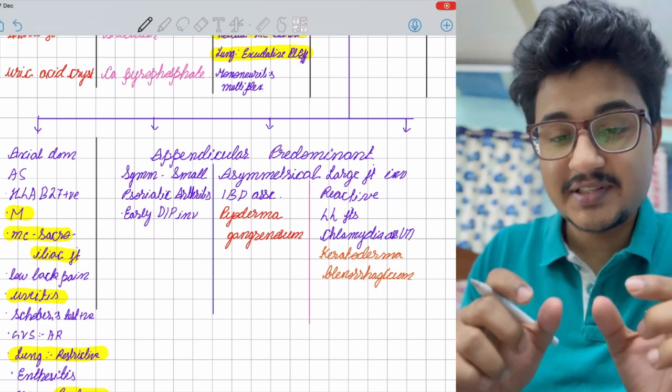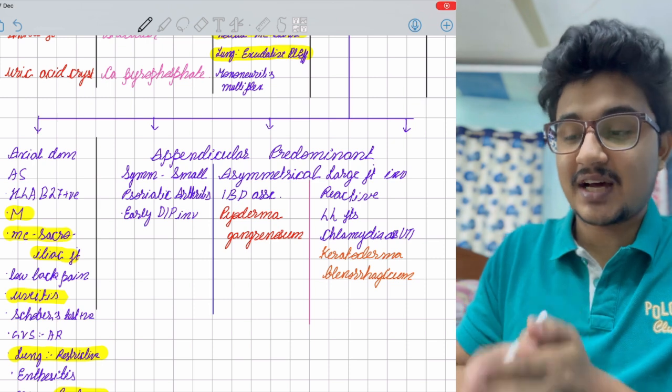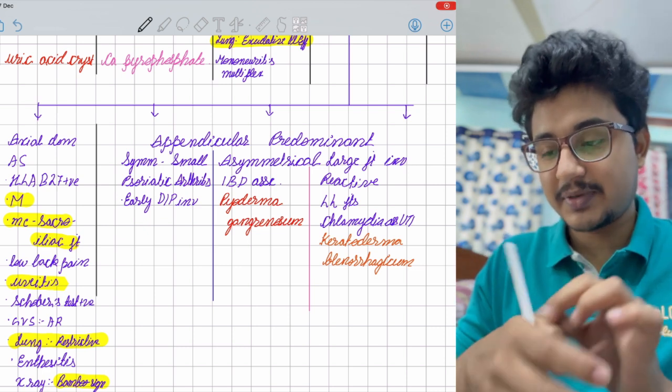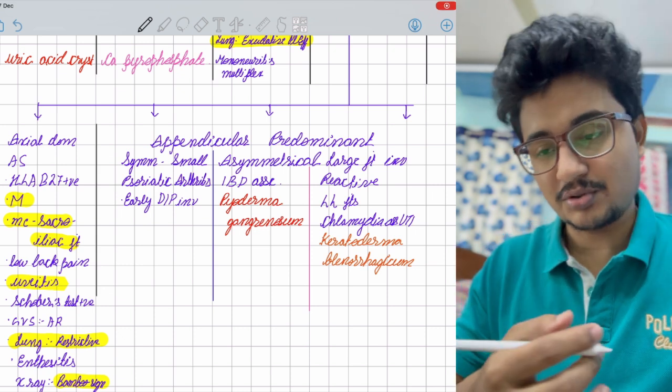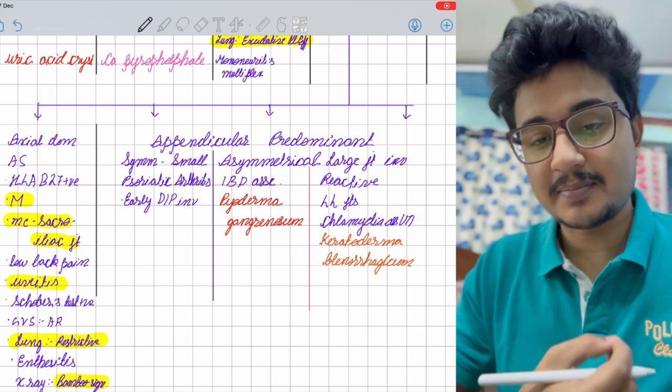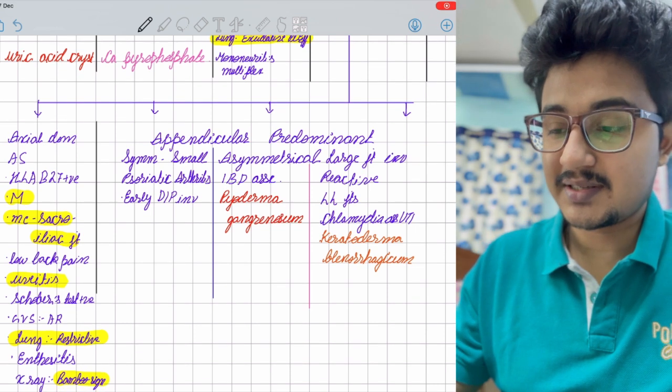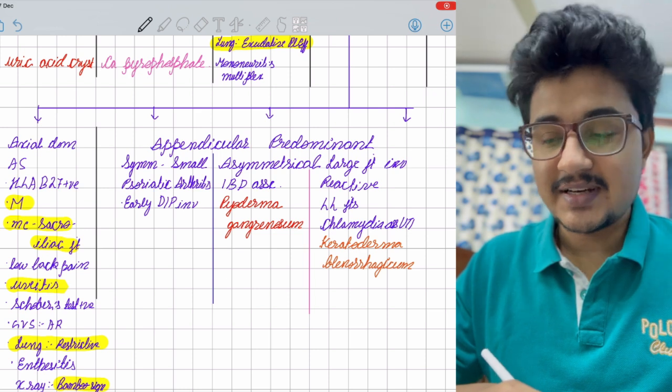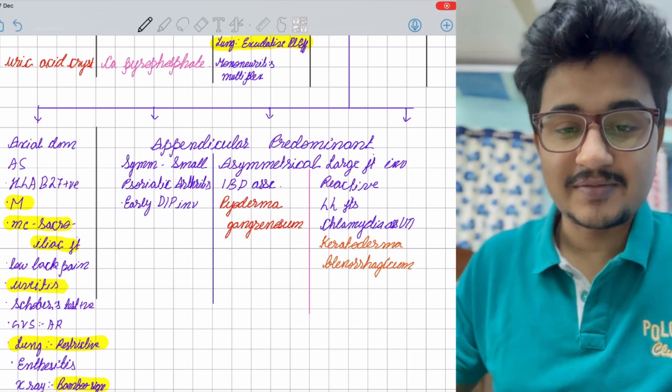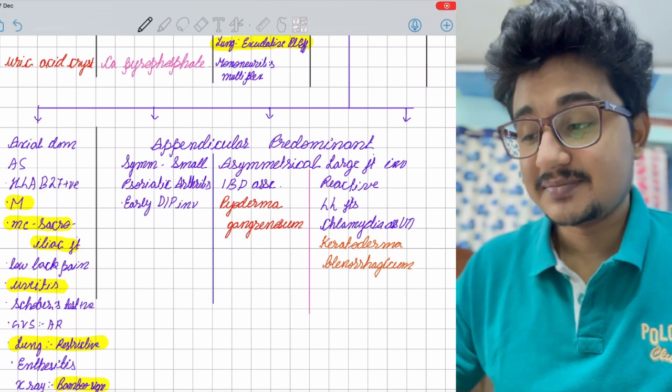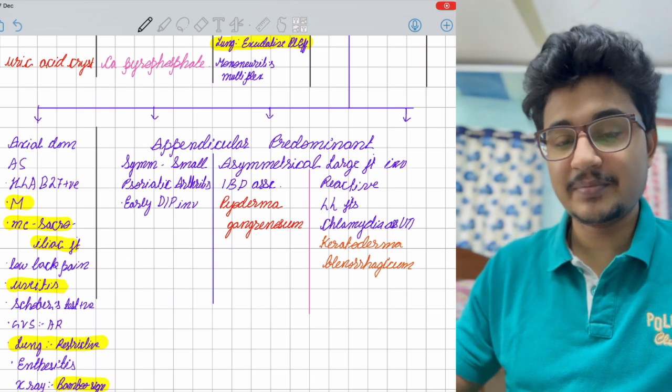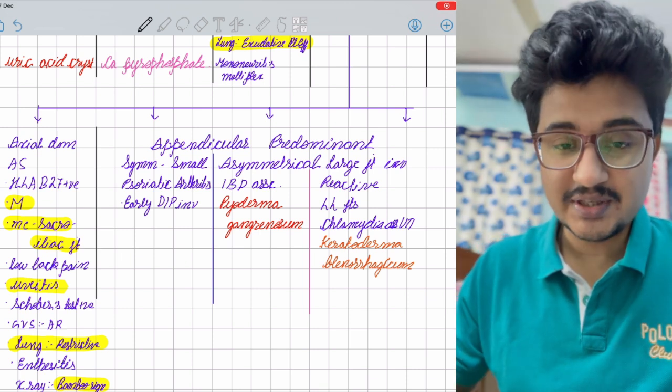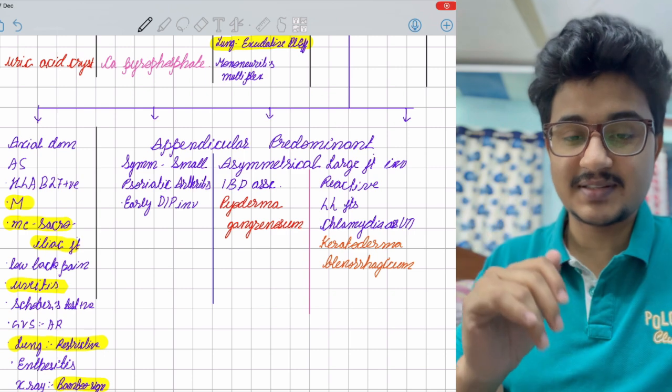Appendicular spondyloarthritis is classified into symmetric small joint type and asymmetric large joint type. Symmetric small joint type is psoriatic arthritis where distal interphalangeal joint and first carpometacarpal joint are involved. Patients with psoriasis complain of pain with early DIP involvement. Asymmetric large joint type includes IBD-associated with pyoderma gangrenosum, which is a very difficult condition with large ulcer formation. Another is reactive arthritis, previously called Reiter's syndrome. Lower limbs are involved, associated with UTI, and keratoderma blennorrhagicum can be seen.